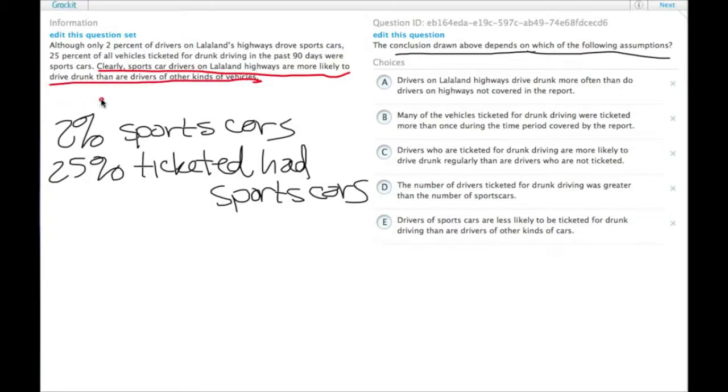In this particular case, we have some terminology that makes a surprise appearance. We go from a larger percentage of sports car drivers being ticketed for drunk driving to saying that they are more likely to drive drunk than are other drivers. They could have just been unlucky in the past 90 days. So we go from the raw evidence, which are these percentages, to saying that those people are more likely to drive drunk.